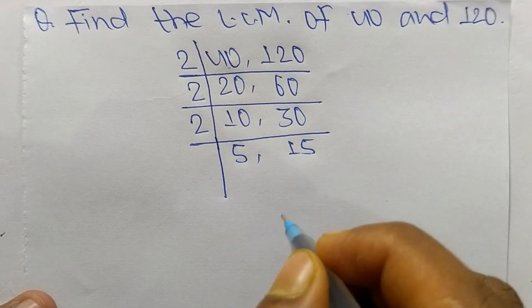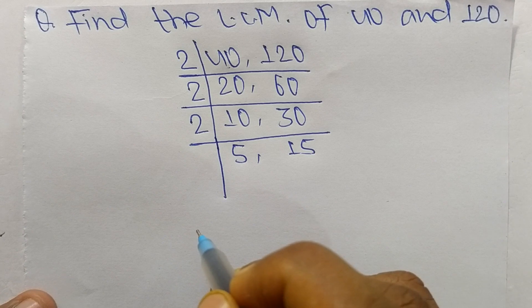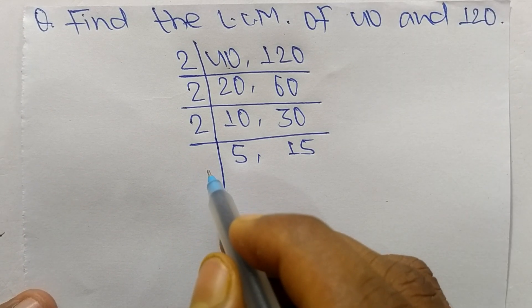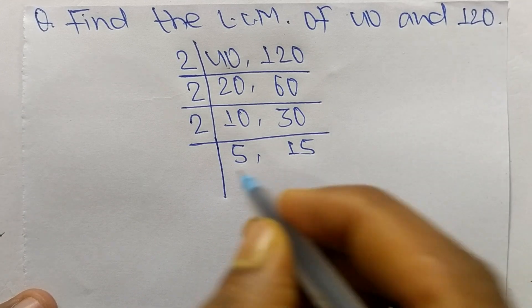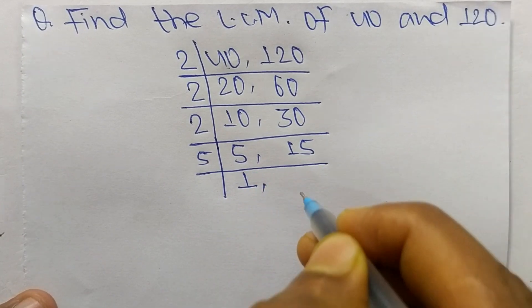Now these both numbers are not exactly divisible by 2, so we choose the number greater than 2 that can exactly divide 5 and 15. The number is 5. So 5 times 1 mean 5, and 5 times 3 mean 15.